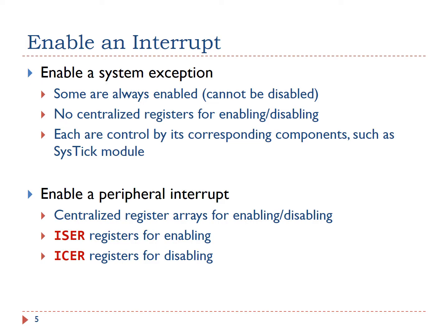Enabling a system exception is different from enabling a peripheral interrupt. There is no centralized enabling or disabling register for system exceptions. Some system exceptions, such as reset and hard fault, cannot be disabled — they are always enabled. Other system exceptions can be enabled or disabled by their corresponding module, such as the system timer. For peripheral interrupts, enabling and disabling are implemented by modifying two sets of registers: ISER registers and ICER registers.